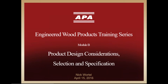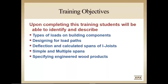Thank you, Marilyn. Let's get started. Let me remind you that individual manufacturer recommendations may differ. You should consult the appropriate manufacturer's literature when specifying any engineered wood products. Today our training objectives will be to identify the types of loads on building components, design for load paths, look at deflection and calculated spans of I-joists, examine the differences between simple and multiple spans, and finally, specifying engineered wood products.